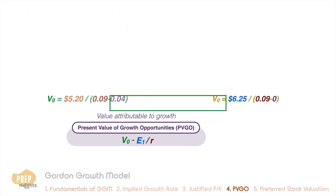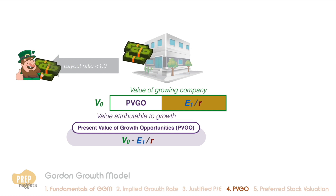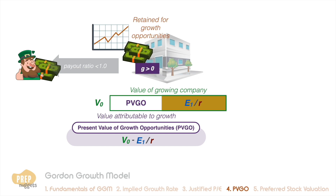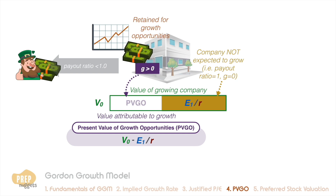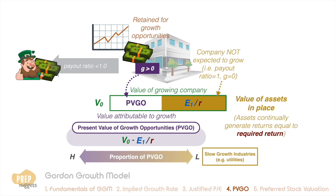The value of a growing company can be segmented into two components. If the payout ratio is less than 1, the company is retaining cash for growth opportunities, so there is expected growth in company value and dividend. This results in a higher intrinsic value than the case where the company is not expected to grow. The difference due to expected growth is the PVGO. The other component, not dependent on growth, is also known as the value of the company's assets in place. In general, companies in slow-growth industries like utilities have low PVGO, and most of their value comes from assets in place. In contrast, high-growth potential sectors like the tech sector tend to be valued more based on their PVGO.